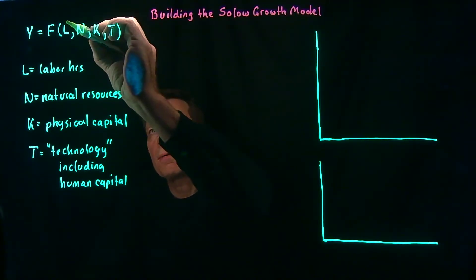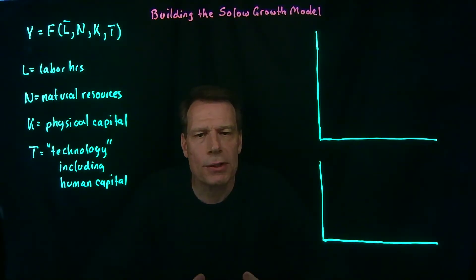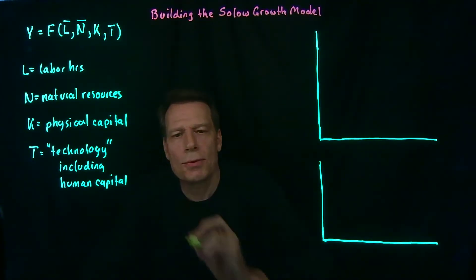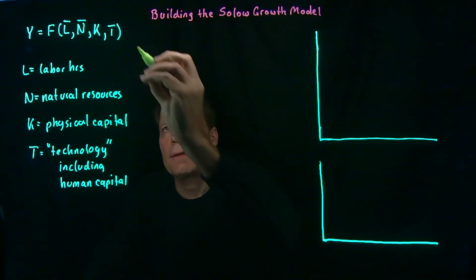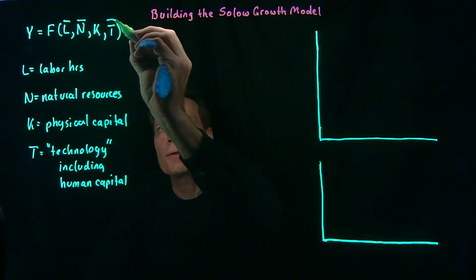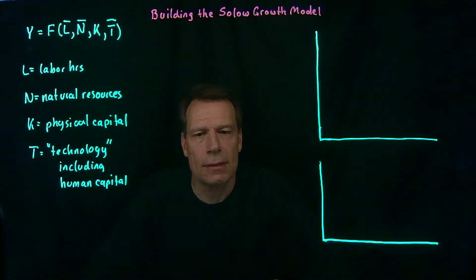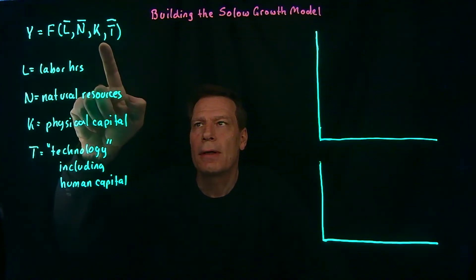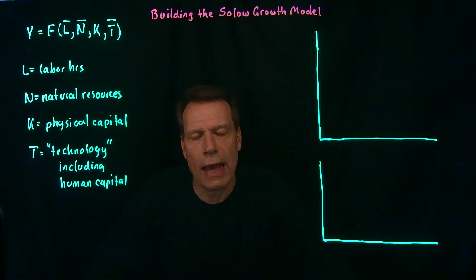We're going to hold labor fixed and assume that the population is constant. Then we're going to hold natural resources fixed and assume those just are what they are. Finally, we're going to hold technology fixed, including the human capital. Now we have a function that's just a function of one variable: physical capital, and we can graph that function.